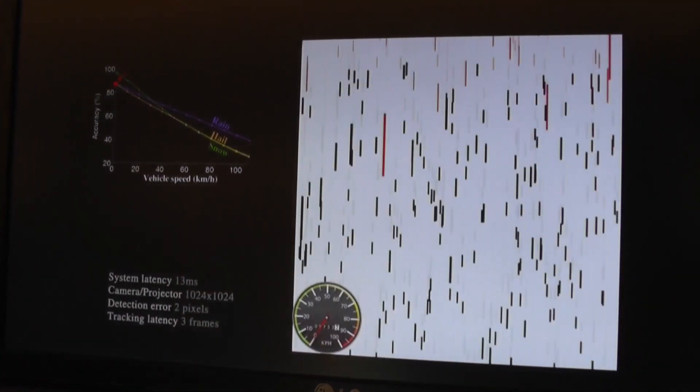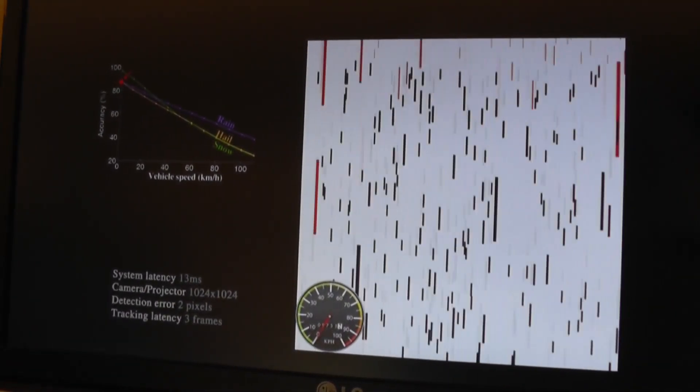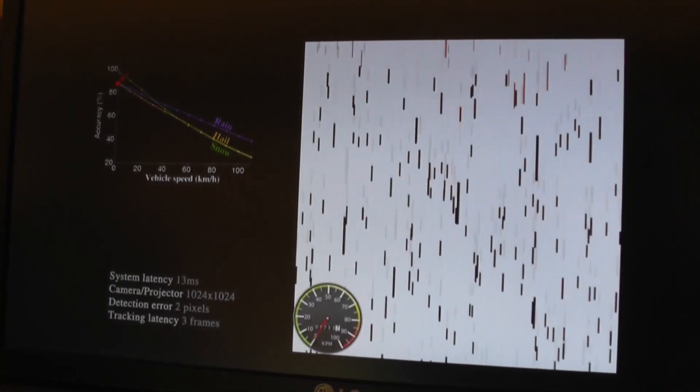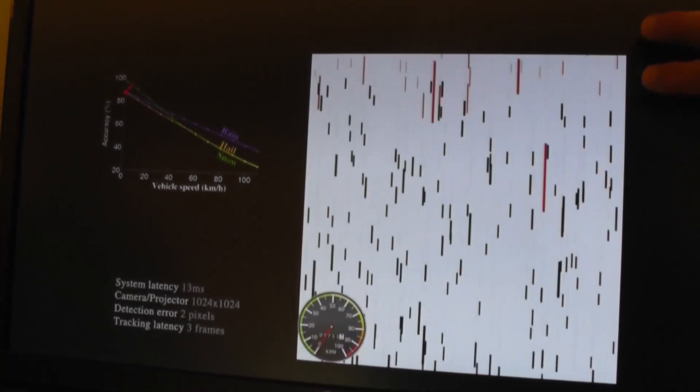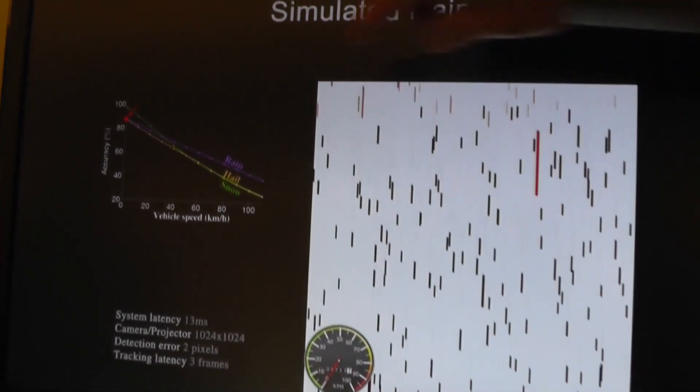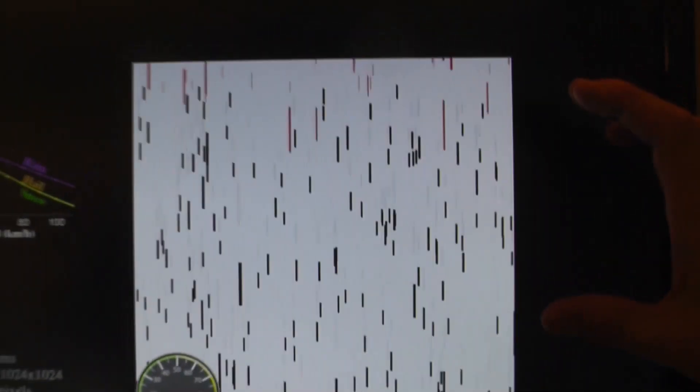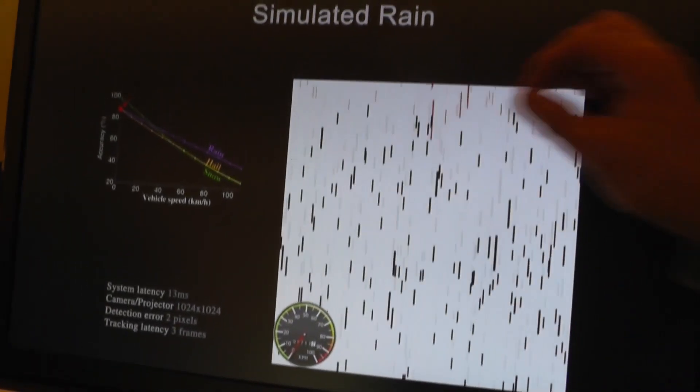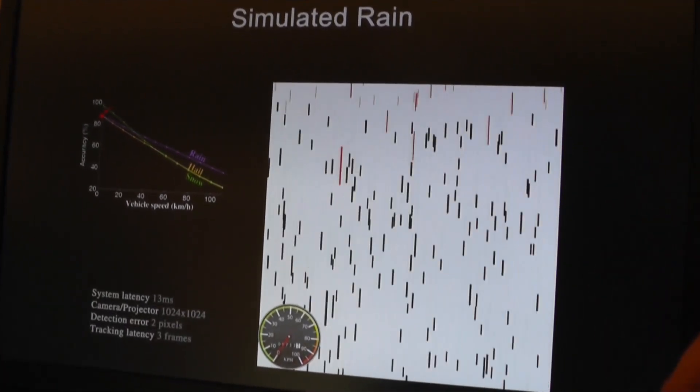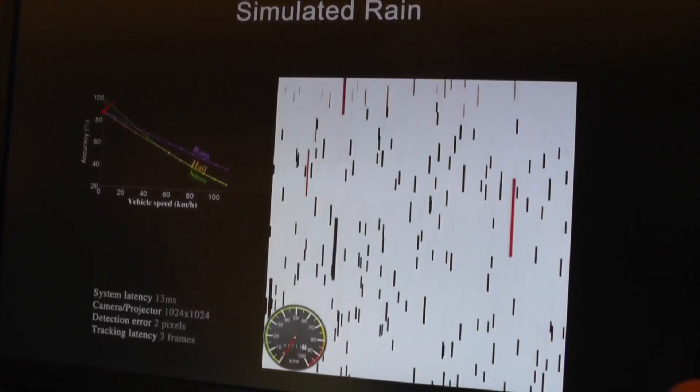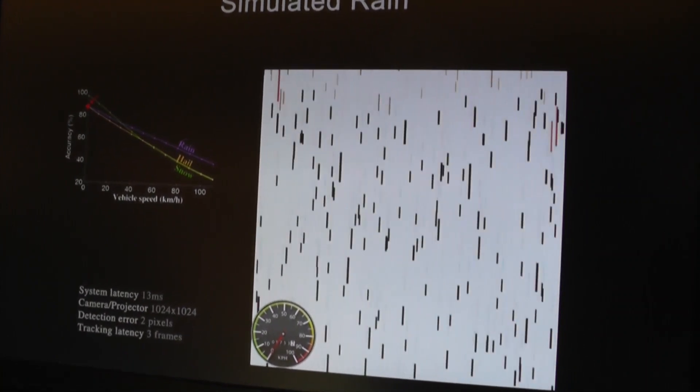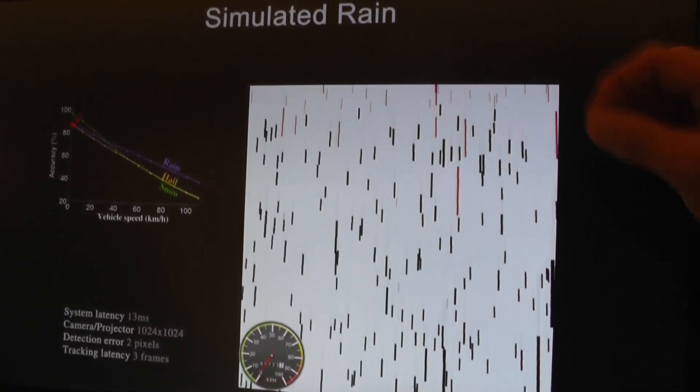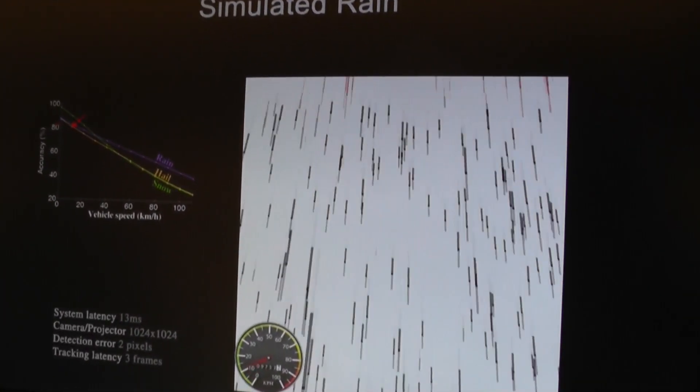Here's a simulation that shows the effects of speed upon our algorithms and process. At the top of the video you can see the red streaks as they begin to enter the view of the headlight. As we begin to understand where those raindrops are traveling, the black streaks represent those raindrops that we've successfully eliminated. The red streaks are ones that we've missed that are making their way through.